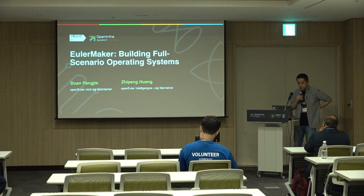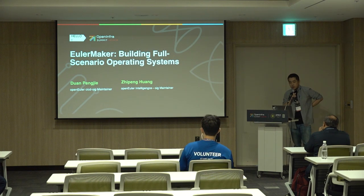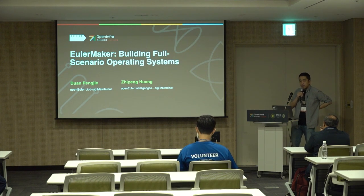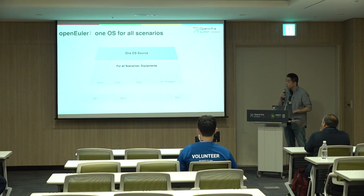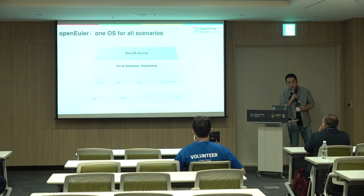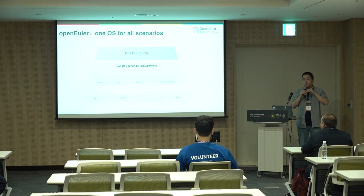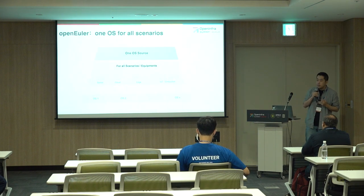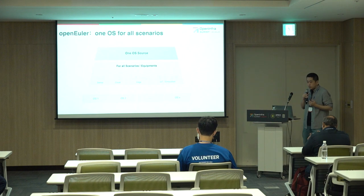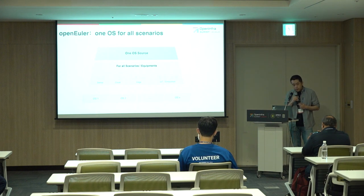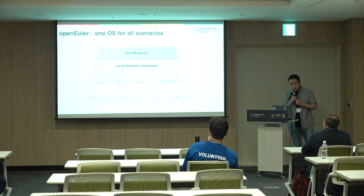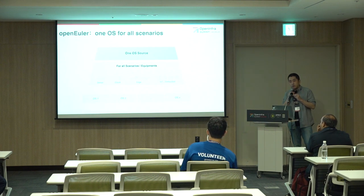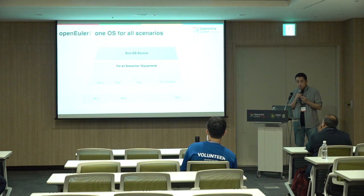This talk is about EuroMaker, the build system for one of our biggest open source operating system projects. What is OpenEuler? OpenEuler is a new open source operating system — think of it like CentOS or SUSE, very similar to those OSes. OpenEuler was open sourced at the end of 2019, so it's now four or five years old.